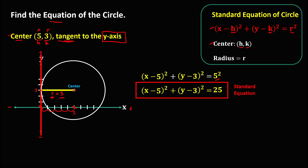To find the general equation, we need to expand the standard equation. For x minus 5 quantity squared, we use the shortcut SMS method: Square, Multiply, Square. The square of x is x squared, then multiply: 2 times negative 5 equals negative 10, times x gives negative 10x, then plus the square of the last term, the square of 5 is 25.